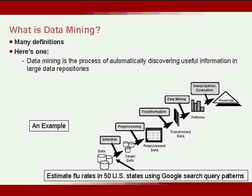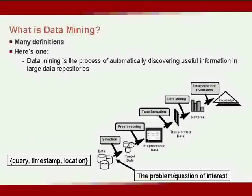Before moving on, I wanted to give the example of Google Flu Trends. Our goal was to estimate flu rates in 50 U.S. states using Google search query patterns. Google has this large database of search queries issued by people from all over the world, and we felt there's a powerful signal there that could be mined for public health. The data includes each search query, the timestamp it came in, and the location from which it was issued — so with some granularity, we're able to determine with a level of confidence where a search query came from.